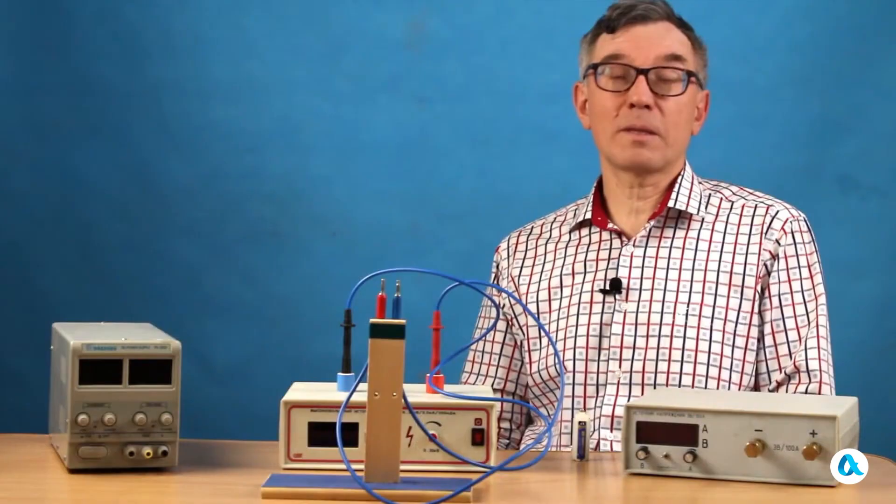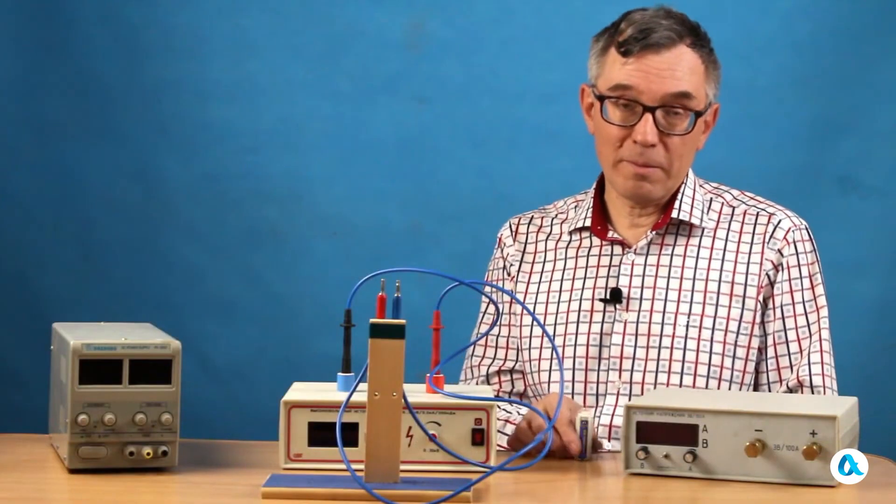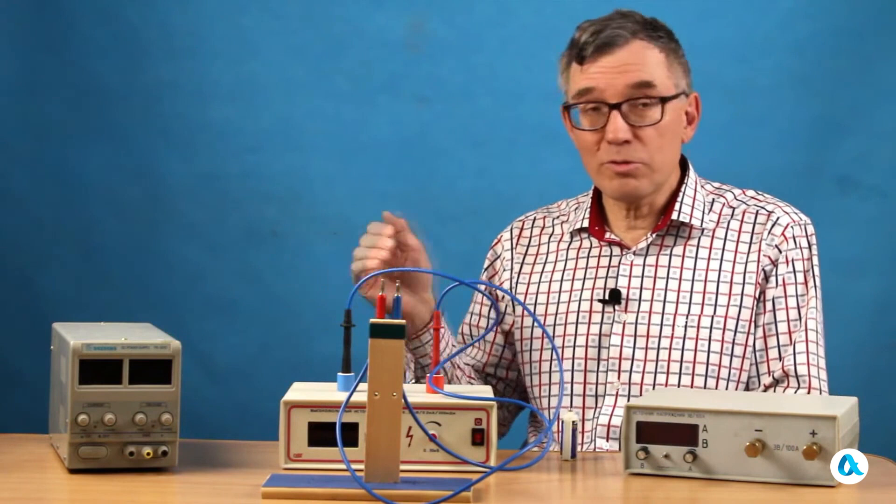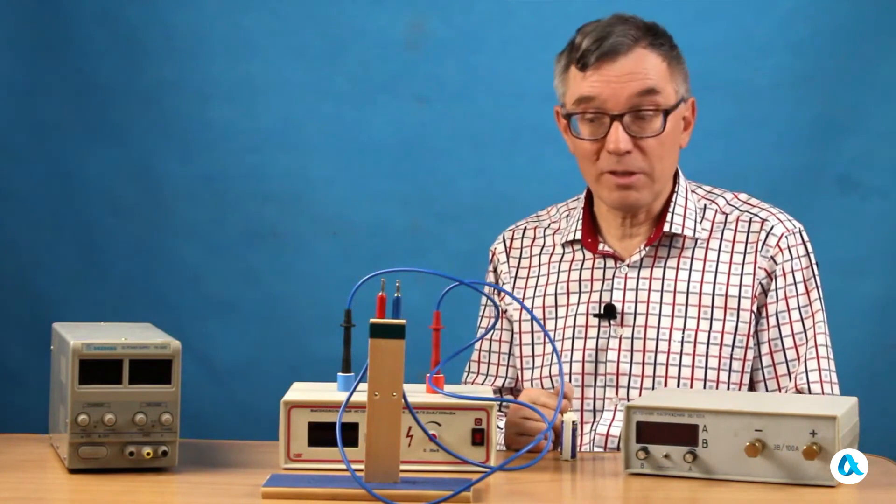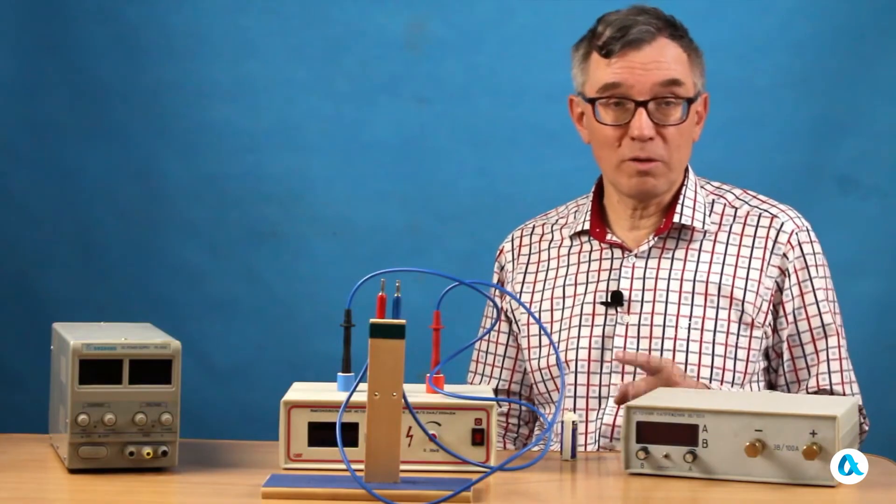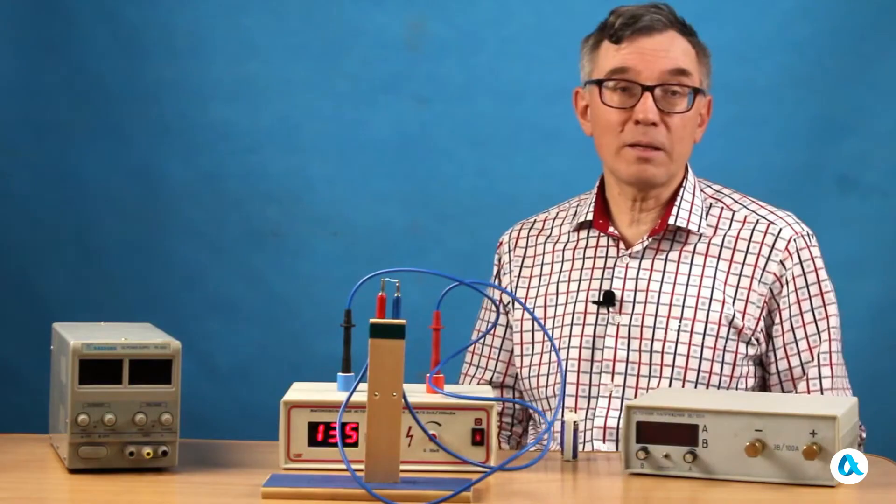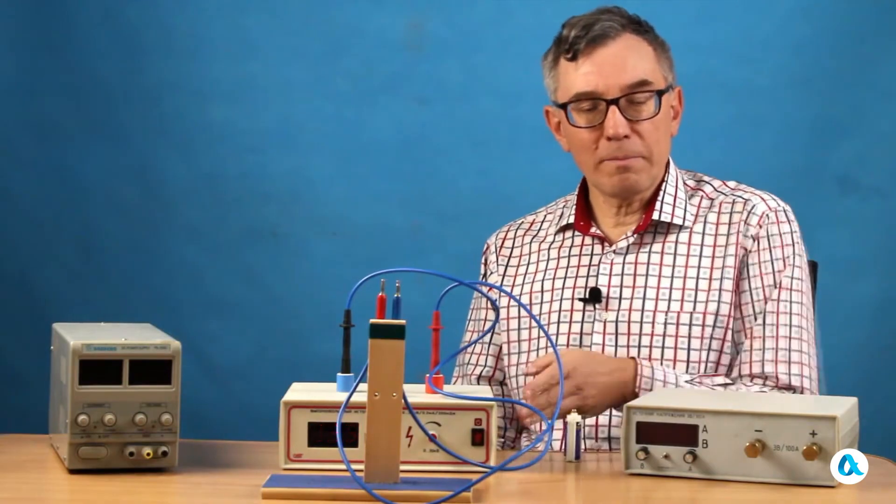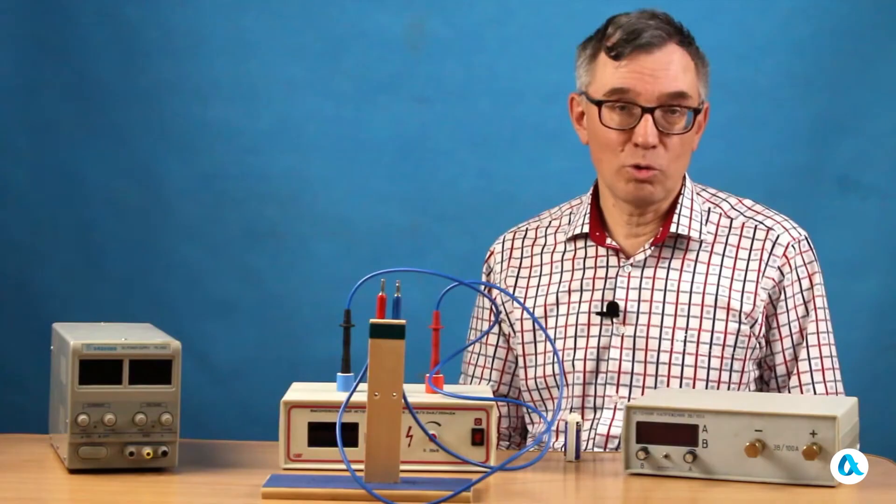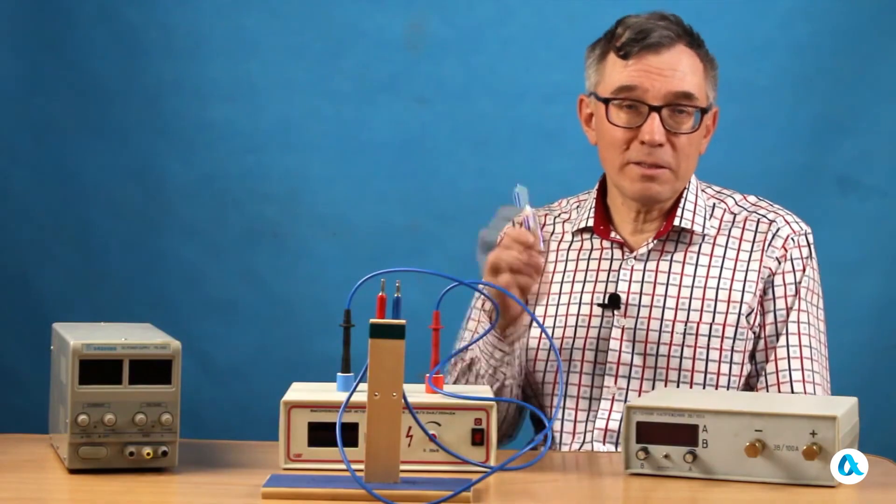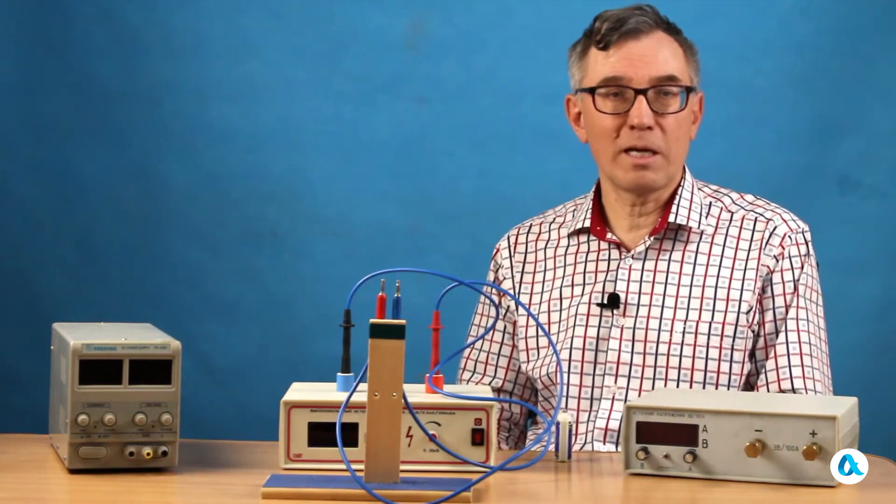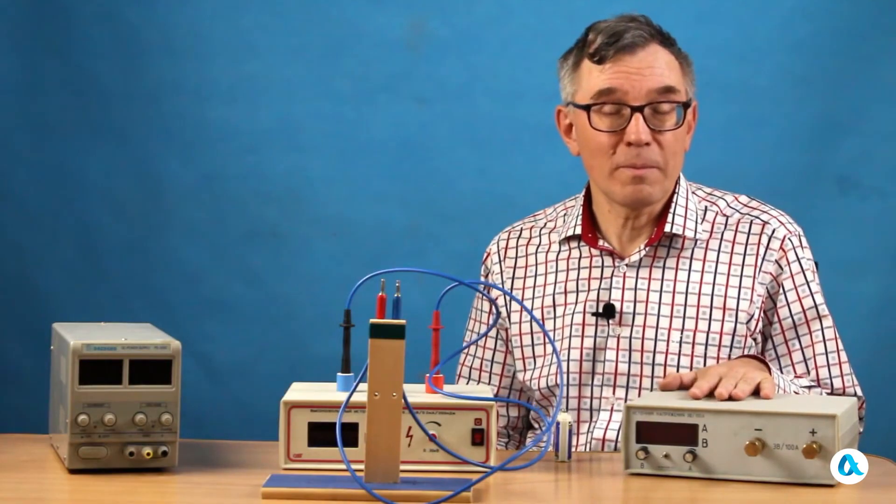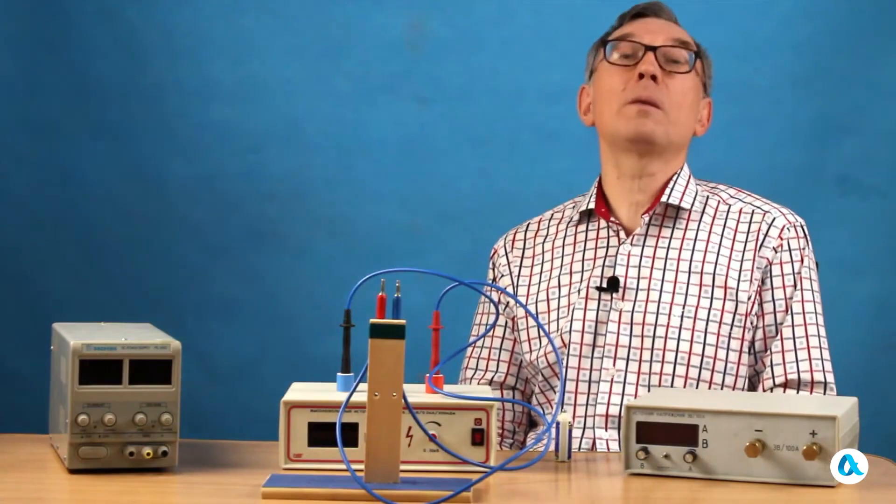And now I want to show you several different school power supplies that we use in our work. This battery, as you already know, provides a voltage of 4.5 volts. This power supply delivers a voltage of up to 30 volts, and a current of up to 5 amperes. And this high voltage power supply provides a voltage of up to 30 kilovolts. I turn it on, and to our delight, a spark discharge lights up between the electrodes. Well, this power supply is, in a way, the most interesting of them all. It provides a voltage of only up to 3 volts, less than the battery. But, the current can reach up to 100 amperes. And I want to ask you, what do you think such a power supply could be used for? Share your thoughts on this in the comments to this video on YouTube.